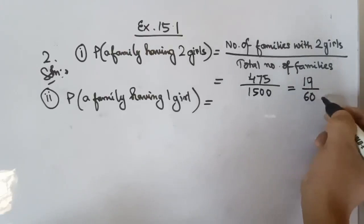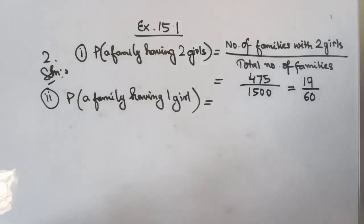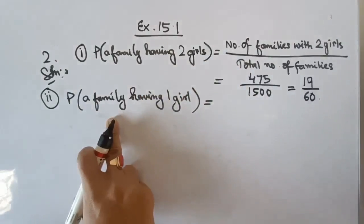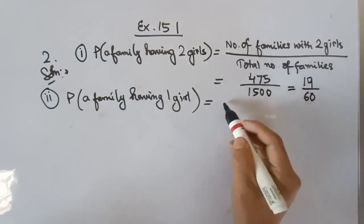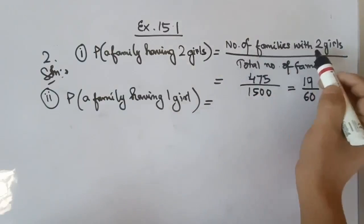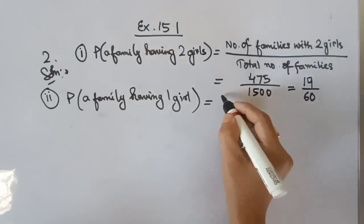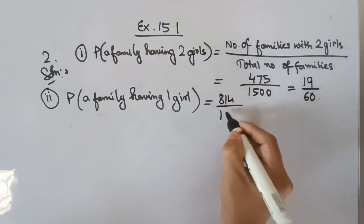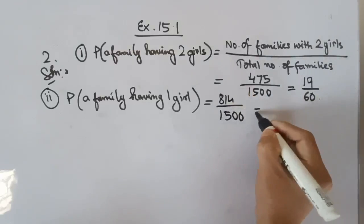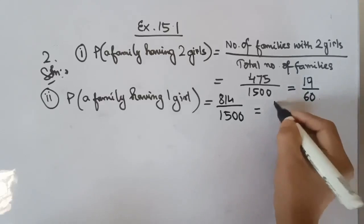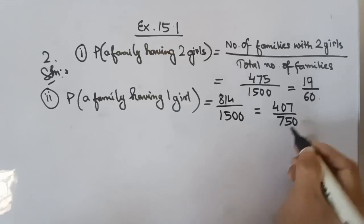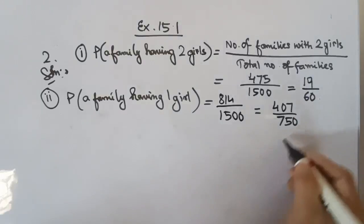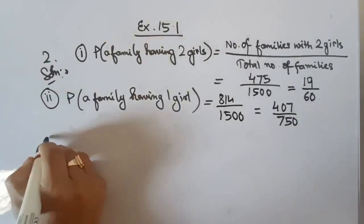For part 2, the probability of a family having one girl is equal to the number of families with one girl divided by the total number of families. That is 814 divided by 1500, which equals 407 by 750. So the required probability is 407 by 750.